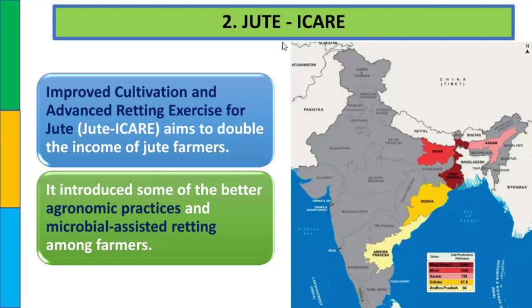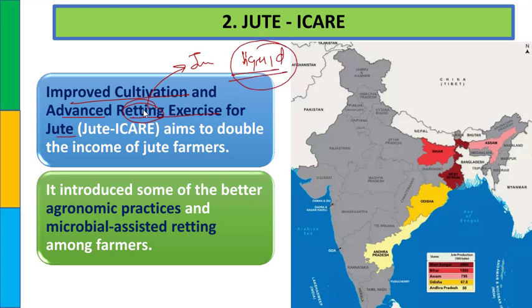Retting एक ऐसा process है जिसमें jute को liquid में बहुत दिन तक dip करके रखते हैं. Liquid में dip करने से जो भी fibers हैं वो loose हो जाते हैं और उनका अच्छे से use कर सकते हैं. इसीलिए जितने भी ocean side या जहाँ पर बड़ा river flow करता है, वहीं पर jute cultivation होता है, क्योंकि बड़े amount में पानी की जरूरत होती है.